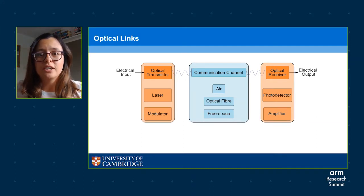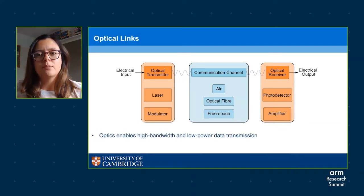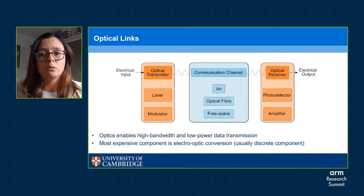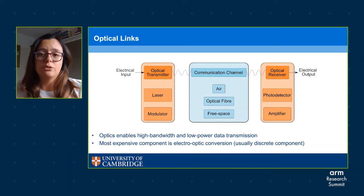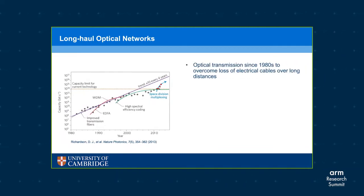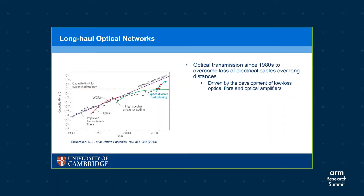We are interested in using optics because it enables high bandwidth and low power data transmission. Generally the most expensive part of the optical link is the electro-optic conversion, which historically was always done with a discrete component using exotic materials. Optical networks based on optical fibers have been around since the 1980s. Even though they were much more expensive than electrical cables, they were favored because of the high losses of electrical cables over long distances.